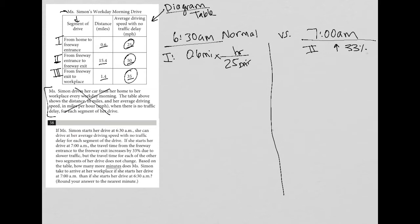where I put the hours because I'm finding time, which means miles should cross out. So 0.6 divided by 25 equals 0.024 hours.